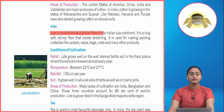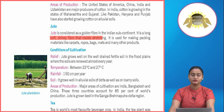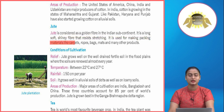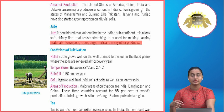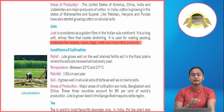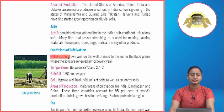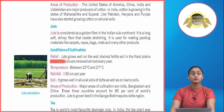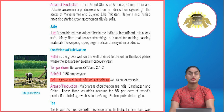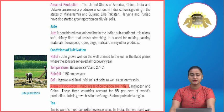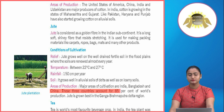Jute is considered a golden fiber in the Indian subcontinent. It is a long, soft, shiny fiber that resists stretching. It is used for making packing materials like carpets, ropes, bags, mats and many other products. Conditions of cultivation — Relief: Jute grows well on well-drained fertile soil in flood plains where soils are renewed almost every year. Temperature: 22 to 27 degrees Celsius. Rainfall: 150 cm per year. Soil: It grows well in alluvial soils of deltas as well as on loamy soils. Major areas of cultivation are India, Bangladesh and China, which account for 85% of world production. Jute is grown best in the Ganga-Brahmaputra Delta region.